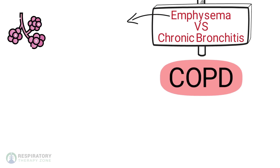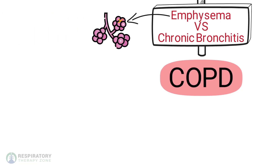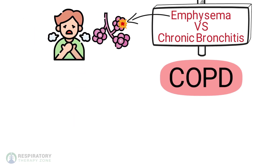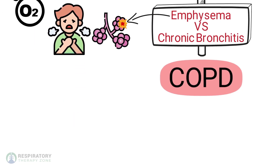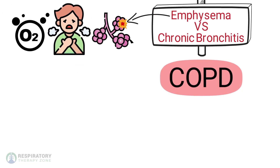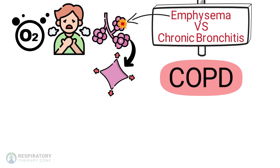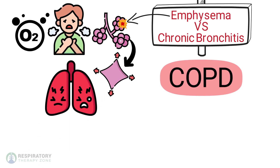The two types of COPD are emphysema and chronic bronchitis. Emphysema is characterized by damage to the alveoli, leading to shortness of breath and reduced oxygen intake. It causes the alveoli to over-stretch and lose their elasticity, making it difficult for the lungs to expel air effectively.